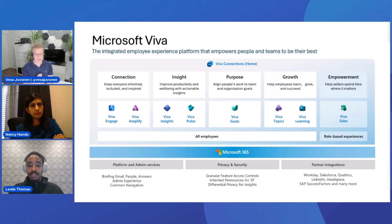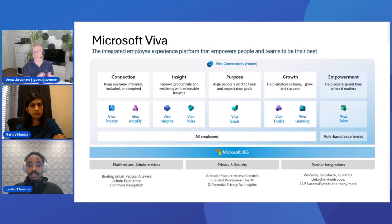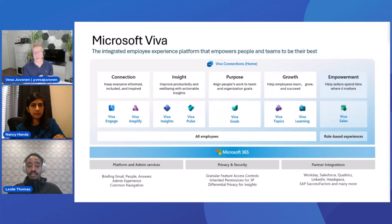All of this is built on top of Microsoft 365, so it has standardized privacy and security features. You access the Microsoft Viva modules typically through Microsoft Teams. There are platform features — you can build extensibility, there are APIs, and a lot of partner integrations as well. The worldwide partner ecosystem is building extensibility on top of individual Viva modules, some of which are available in the Microsoft AppSource.